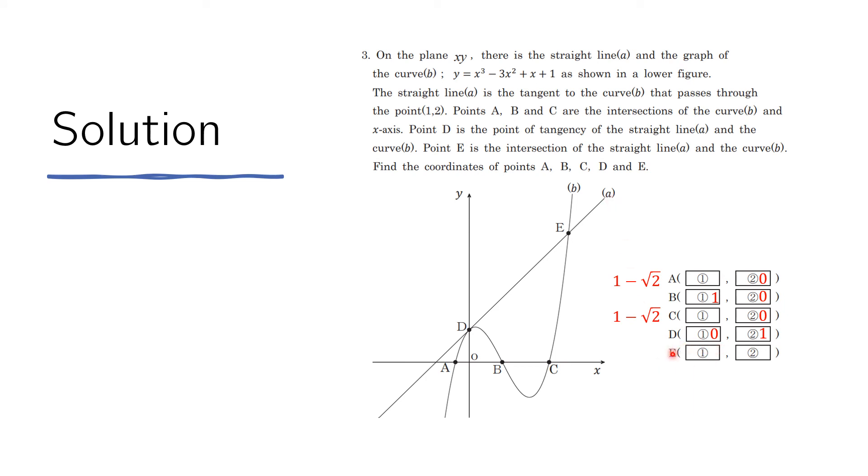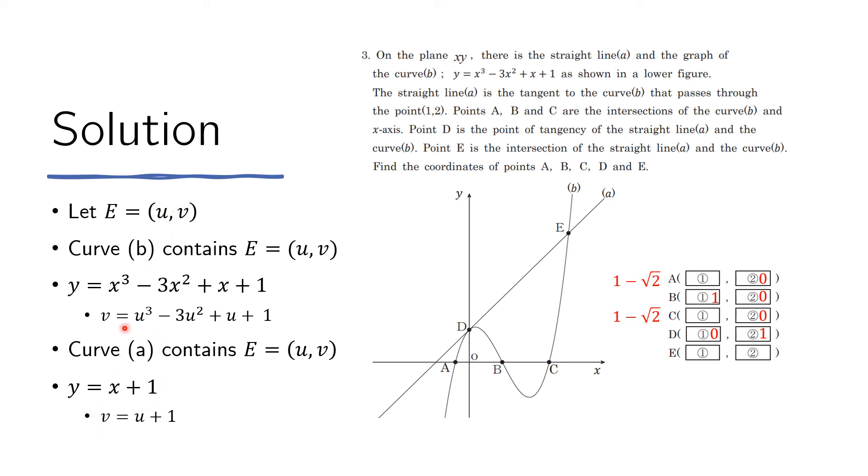So finally, now we can find the coordinates of E. First, let us set those unknowns to be U and V. So U and V. Now E is contained in the curve B. And therefore it should satisfy this equation. So let us replace the Ys here with the V and the Xs with U. And this is what we get. Now E is also part of this equation, line A. And the equation of line A is this. So we can replace the Ys here with V and the Xs with U. And this is what we get. So we now have two equations and two unknowns. This equation and this equation. And let us remember that we're looking for U and V. We have V, U, V, U. So we have to solve these two equations.